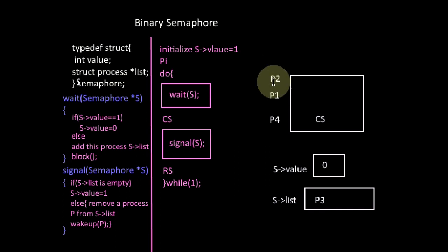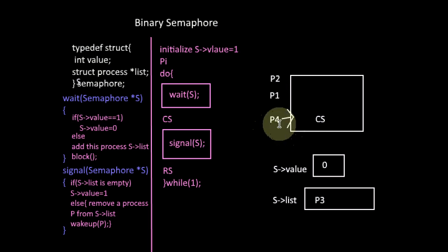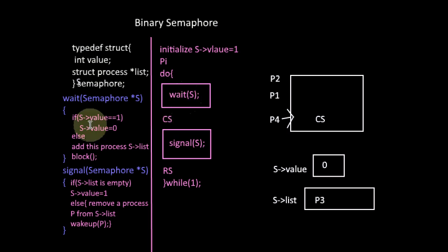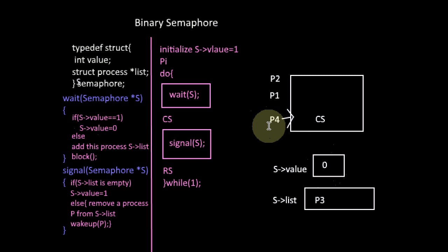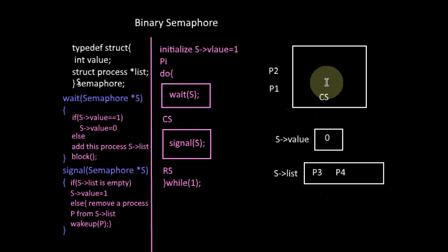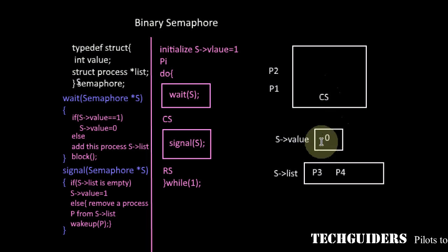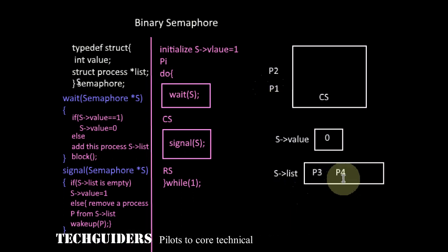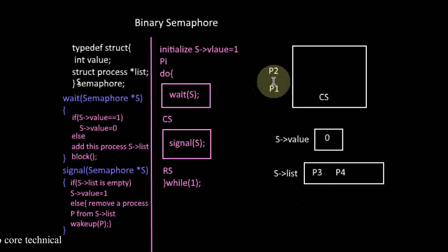If P2 gets the processor, P2 will be able to enter the critical section next. But suppose P4 gets the processor first. P4 wishes to enter the critical section and executes the wait function. It checks the semaphore value — since the value is still zero, P4 is not allowed to enter. P4 adds itself to the waiting queue and moves to the blocked state. So even though the critical section is free, since the semaphore value is maintained at zero while processes are waiting in the queue, any new process that arrives is also sent to the queue.